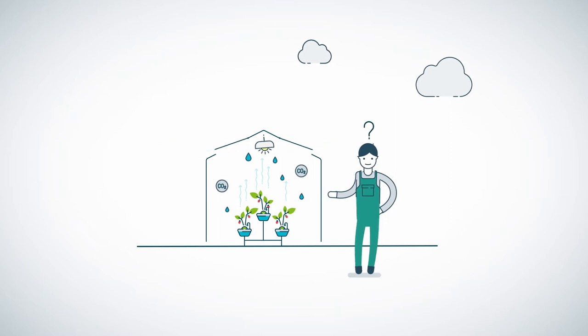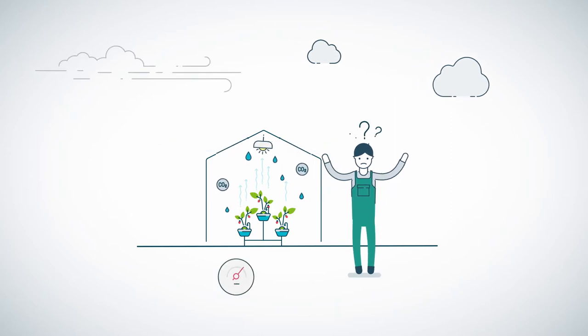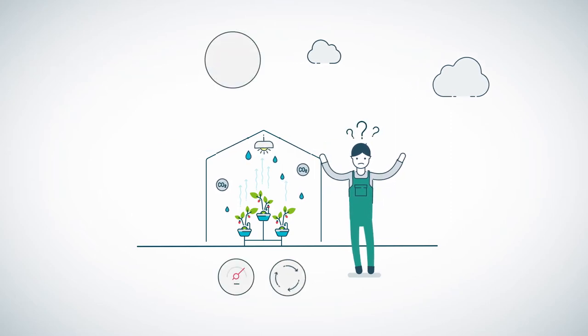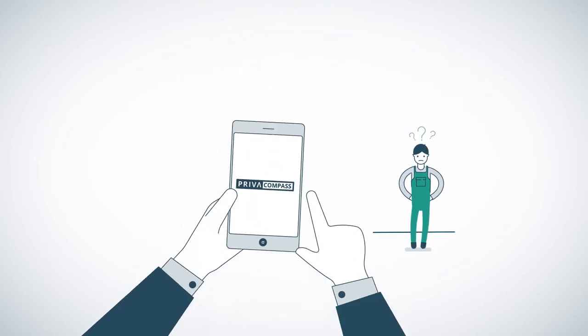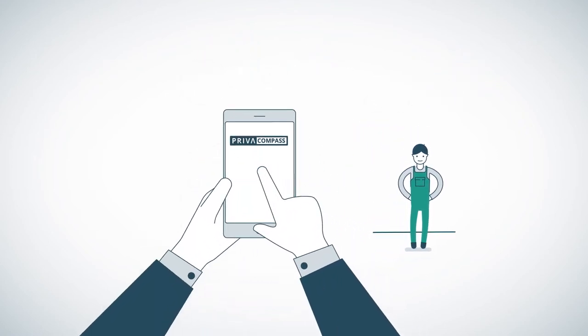So how can you realize a stable environment for your crop and be in charge of every process within your growing operation? Priva introduces the Priva Compass.